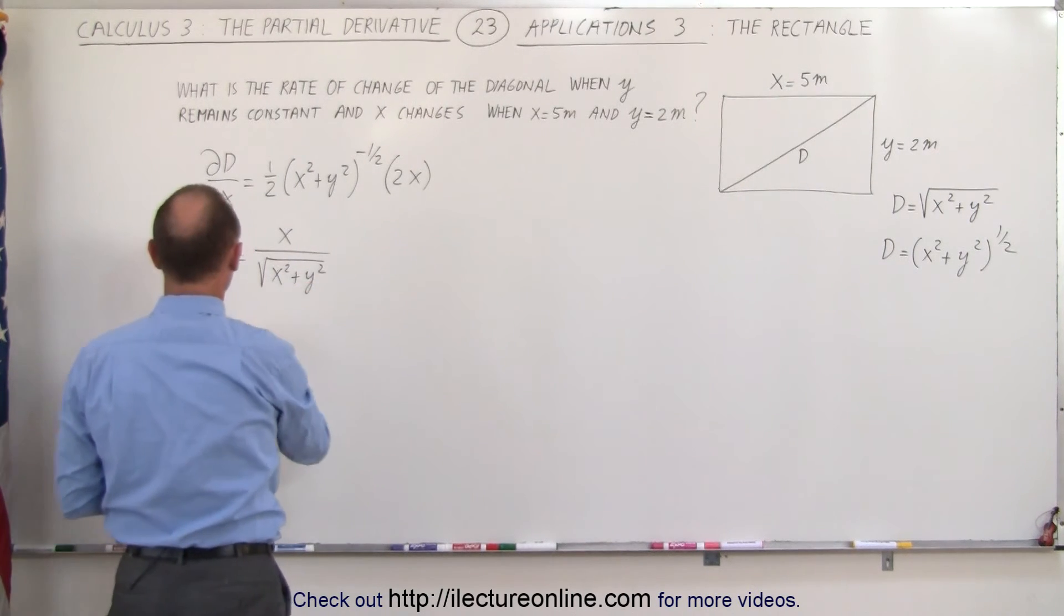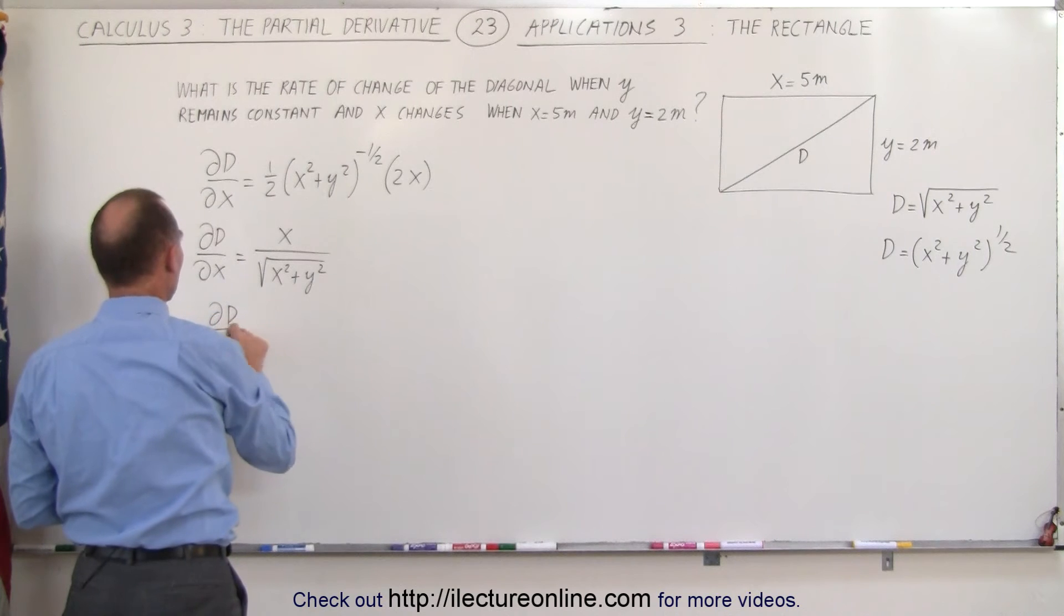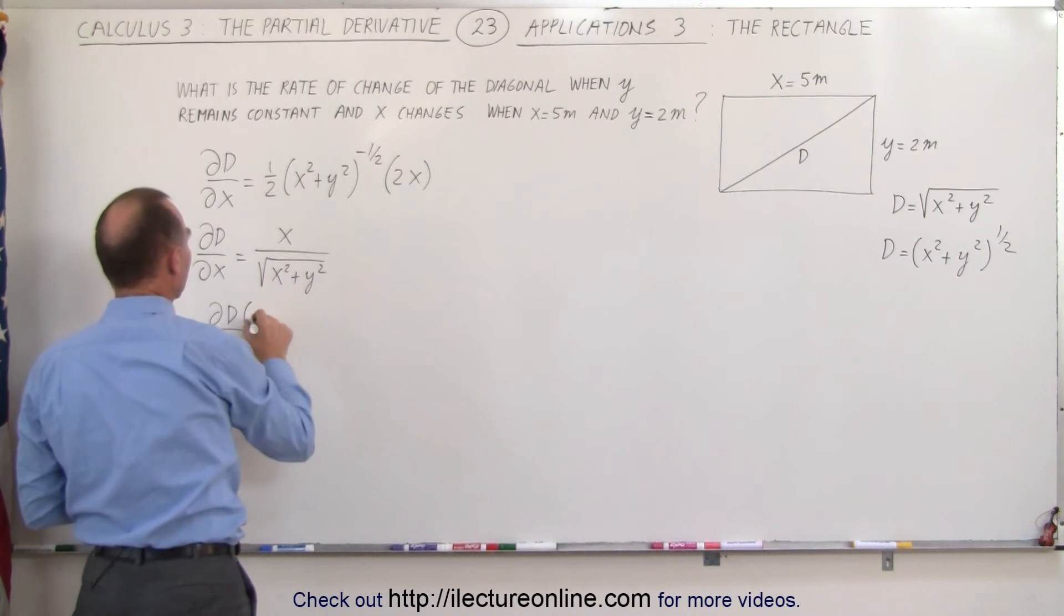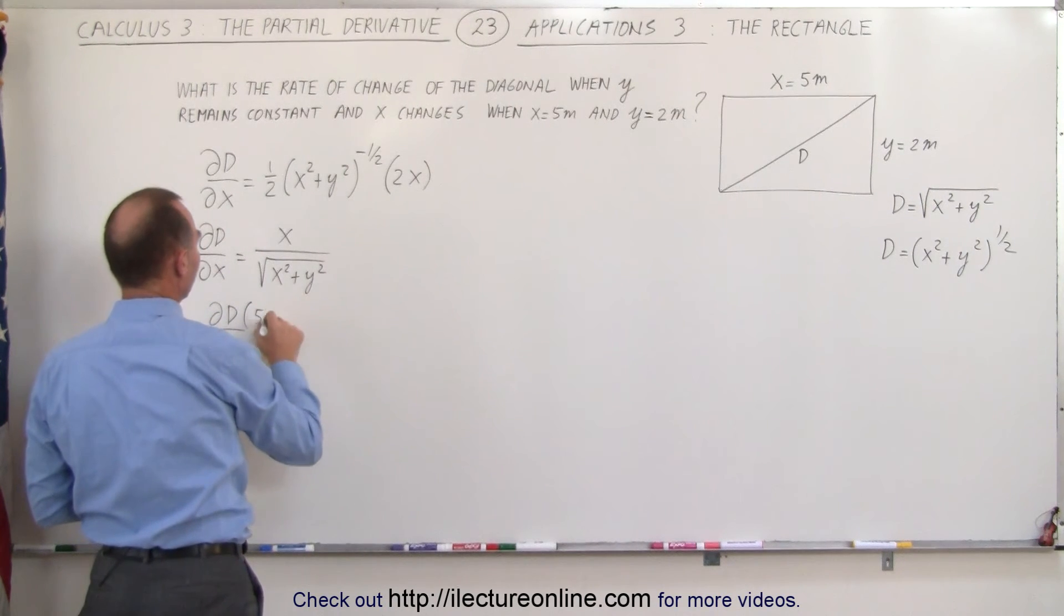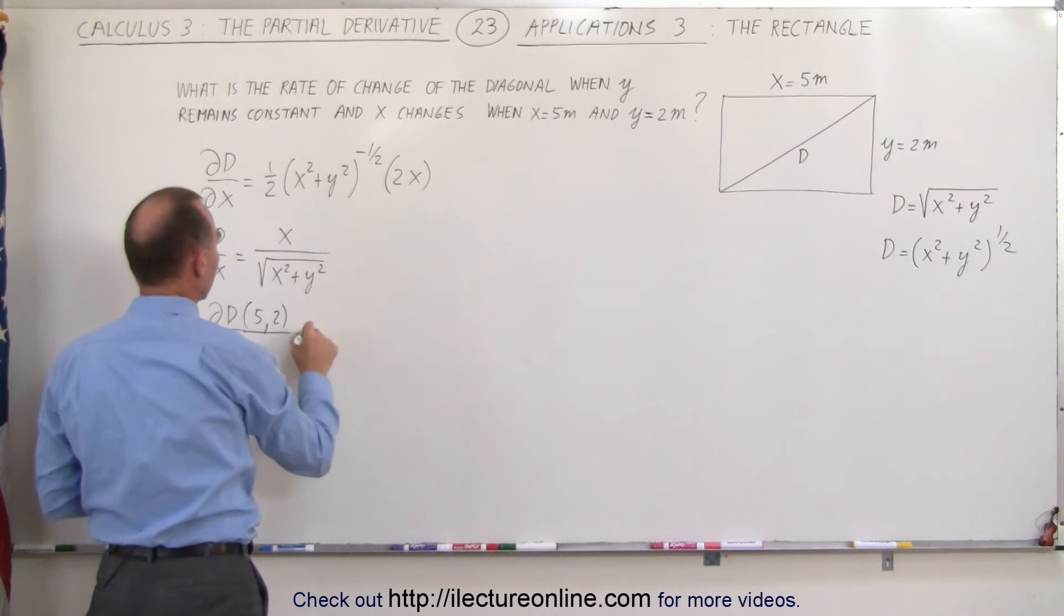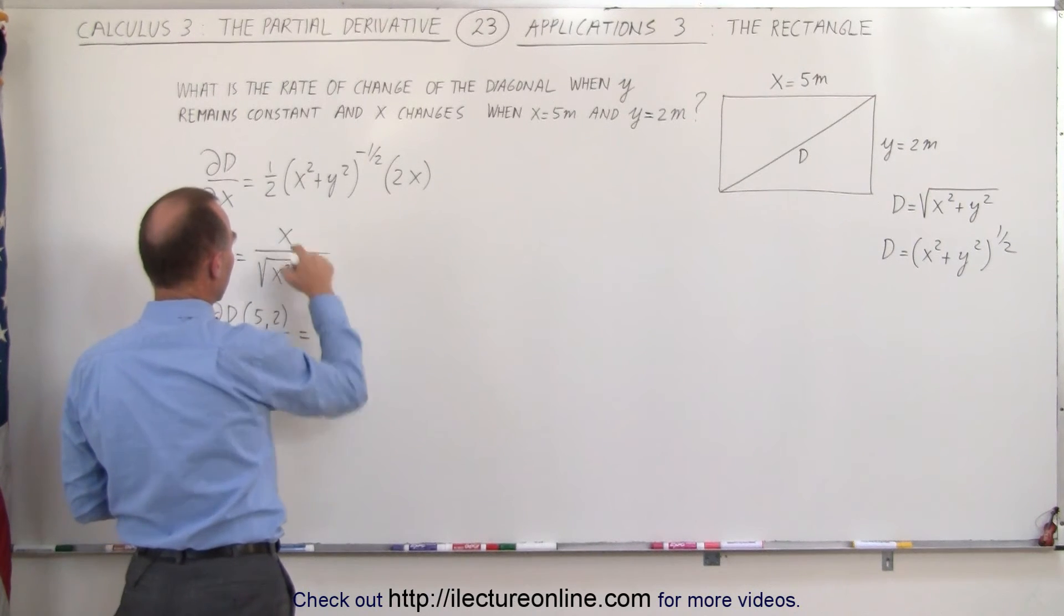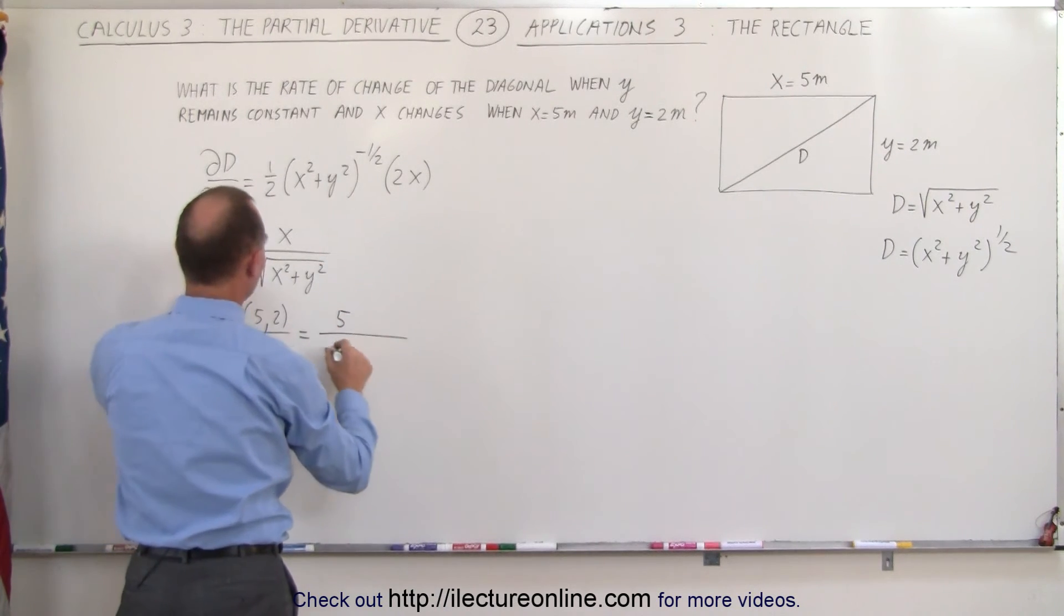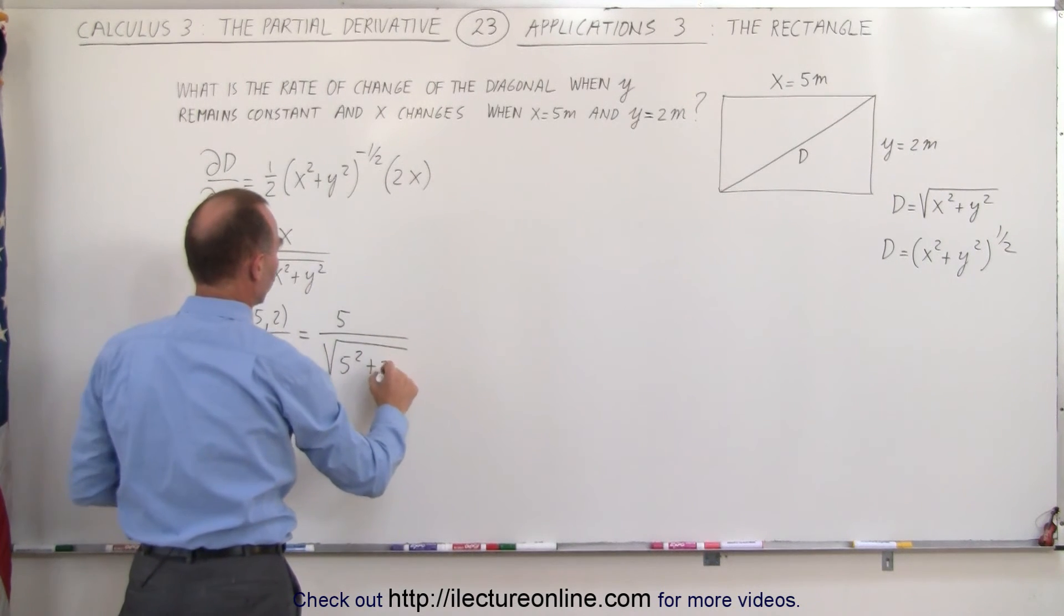Which means that the partial of the diagonal with respect to x when x is equal to 5 and y is equal to 2 is equal to, x will be 5 divided by the square root of 5 squared plus 2 squared.